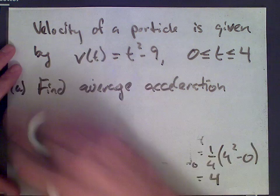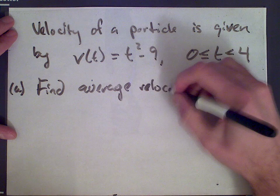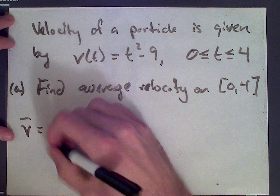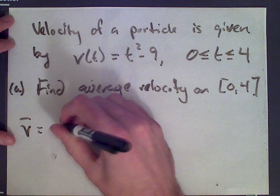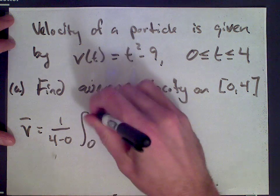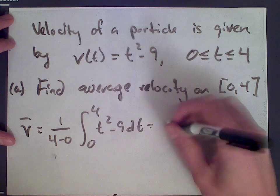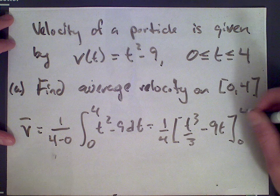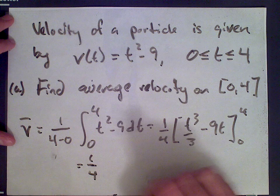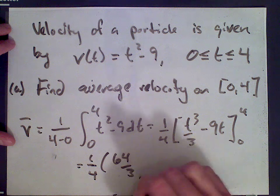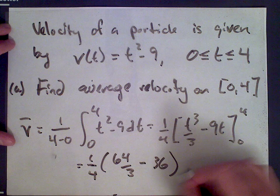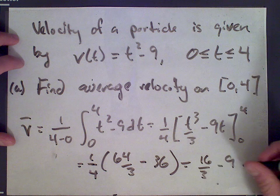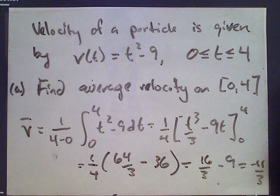Part B asks for the average velocity on the same interval, from 0 to 4. This is v̄ = 1/(4-0) times the integral from 0 to 4 of (t² - 9) dt, which equals 1/4 of [t³/3 - 9t] from 0 to 4. That gives 1/4 of (64/3 - 36), which equals 16/3 - 9 = negative 11/3. So it's negative, meaning that on average the velocity is headed in the negative direction.